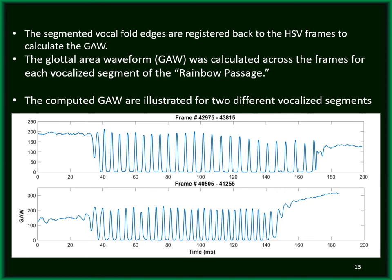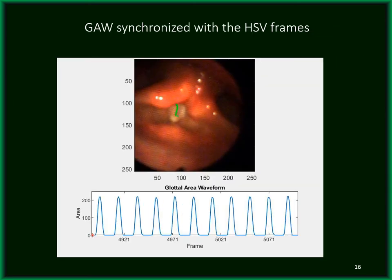After segmenting the vocal fold edges in all kymograms across different cross-sections of the vocal folds, the segmented vocal fold edges are registered back to the HSV frames to calculate the glottal area waveform. The glottal area waveform is computed across frames for each vocalized segment of the Rainbow Passage. You can see the calculated glottal area waveform for two different vocalized segments.